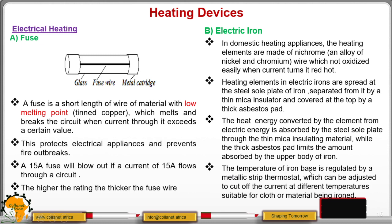Now, the temperature of iron base is regulated by metallic drip thermostat. That can be adjusted. Thermostat will help you to adjust the temperature. For example, if you want a higher temperature, you can now turn.